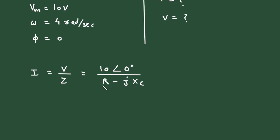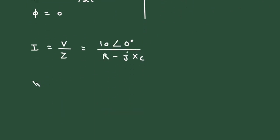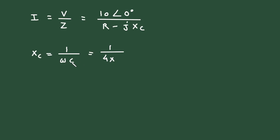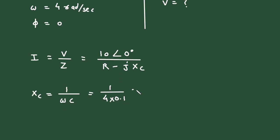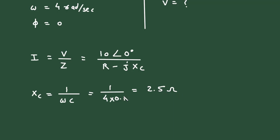We know that R = 5 Ohm. Let us calculate Xc first. Xc = 1 / (ωC). The value of omega is 4 radians per second and capacitance is 0.1 Farad, so Xc = 1 / (4 × 0.1) = 2.5 Ohm.